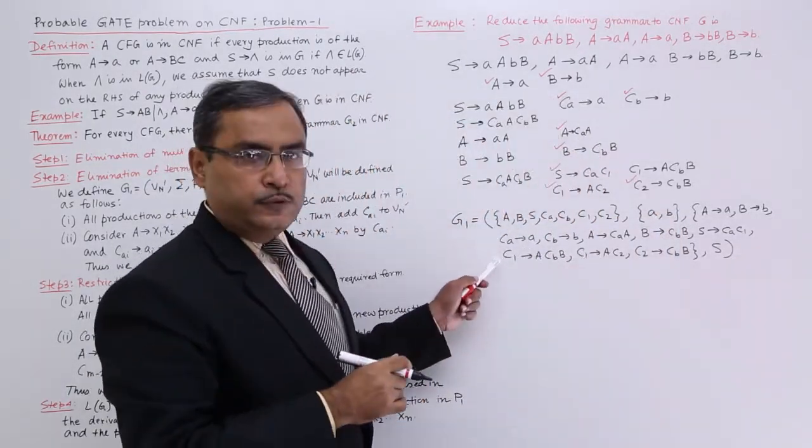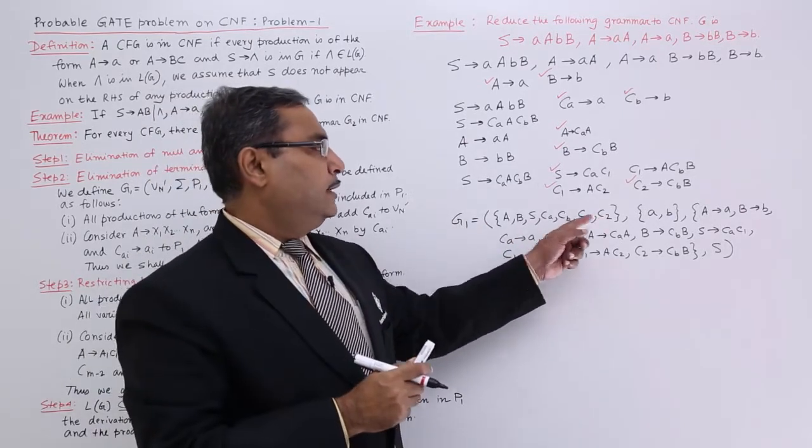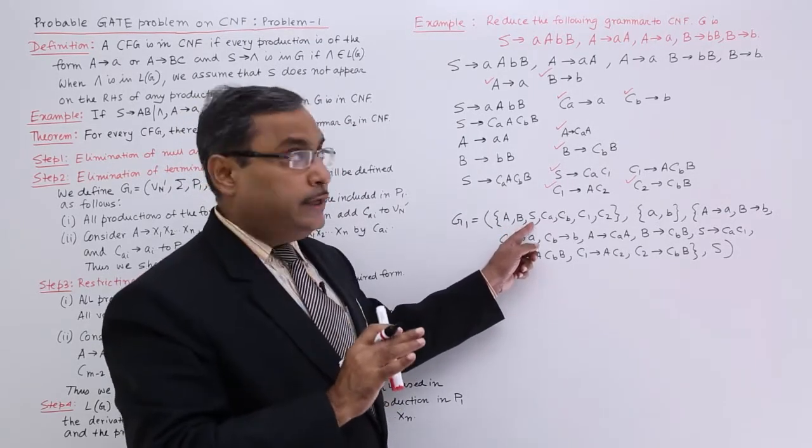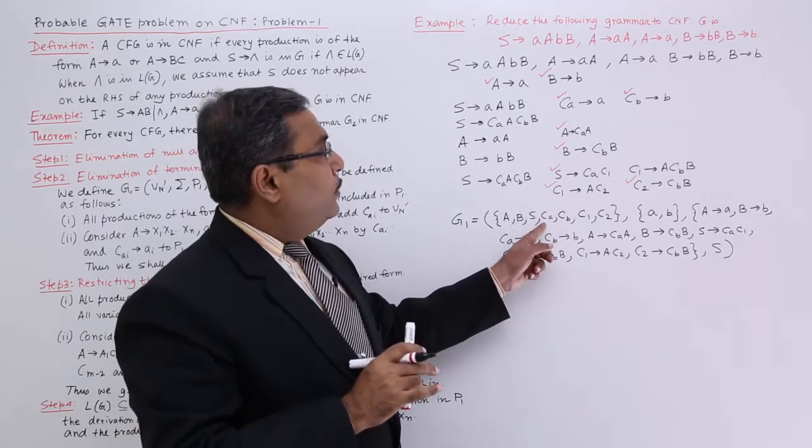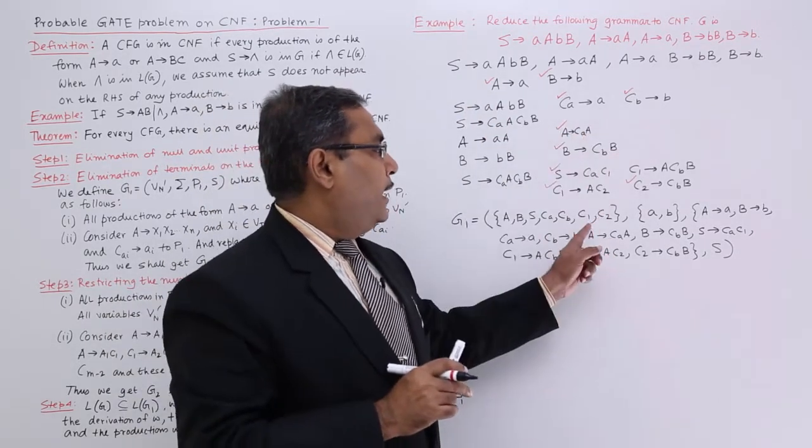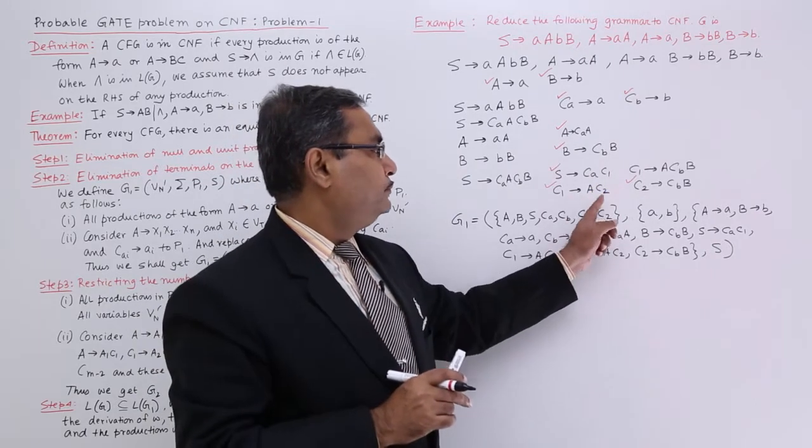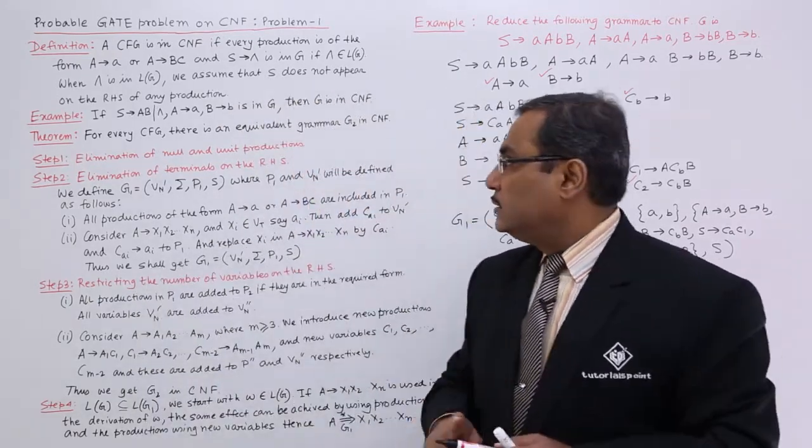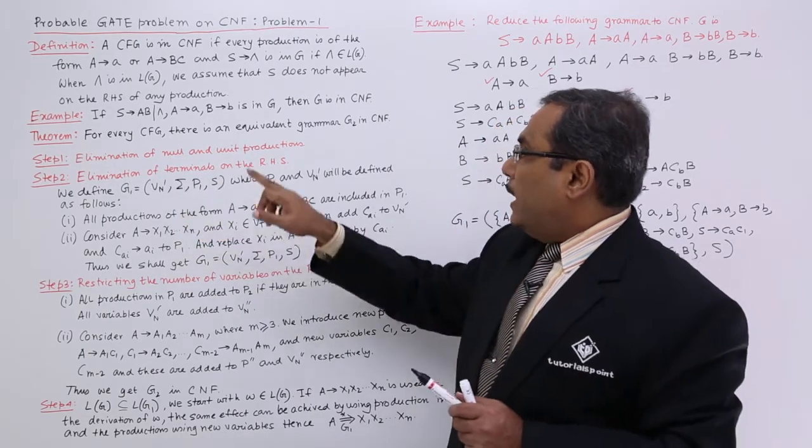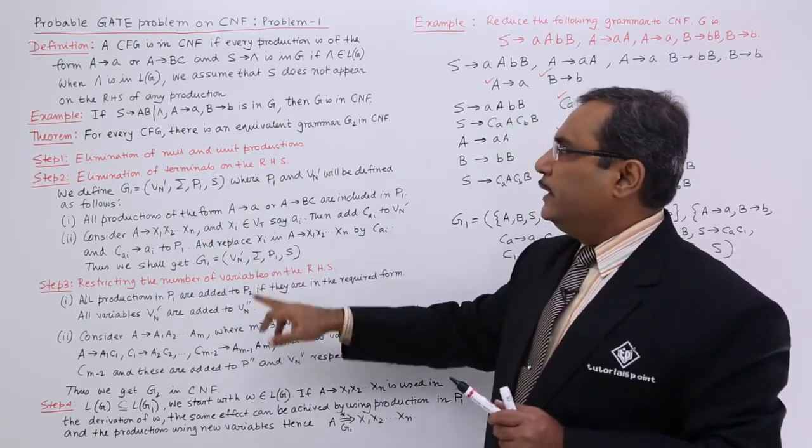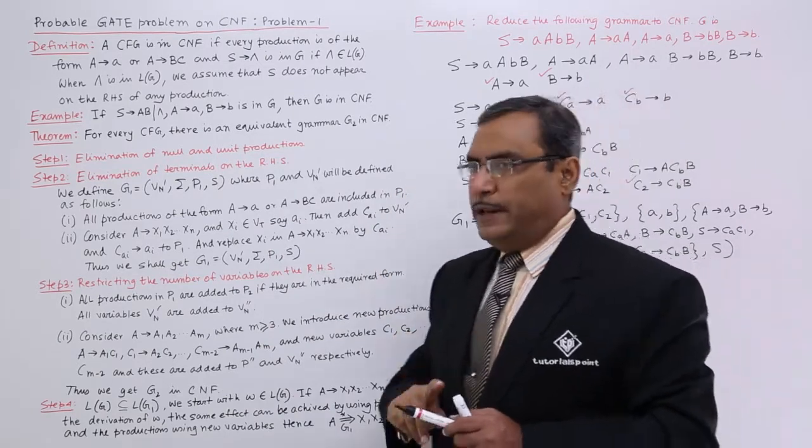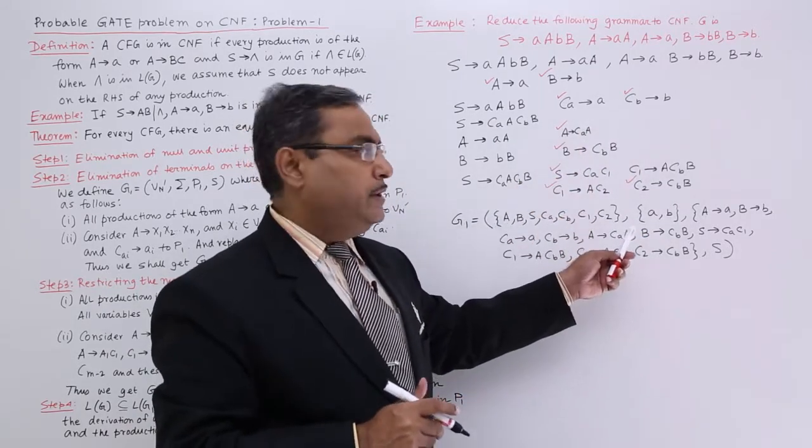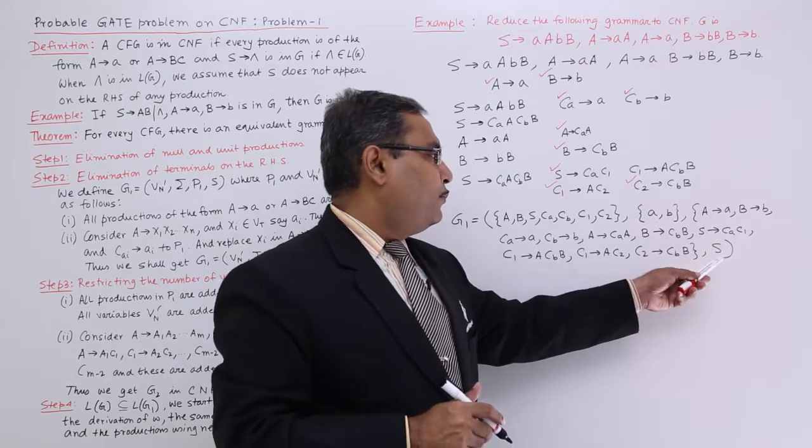This is the total solution we are having. This is Vn, the set of non-terminals. A, B, and S were initially in the source grammar G, and we have included CA, CB, and C1, C2 here. These are the non-terminals. In the terminals, we had sigma, and sigma is not getting changed. We are having A and B because we are not introducing any new terminals. These are the set of production rules from here.